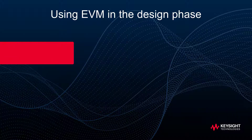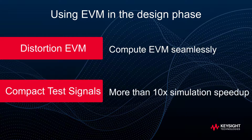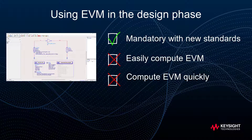Now, two features developed by Keysight, available on Keysight PNX and simulation tools such as ADS or GoldenGate, can help designers to quickly assess the error vector magnitude during the design phase, with a runtime that can be divided by at least 10x. The distortion EVM algorithm will compute the EVM without the need to demodulate the signal. The compact test signals speed up simulations with minimal impact on the EVM accuracy. With these two features, one can now overcome the two main hurdles to use EVM during the design phase.